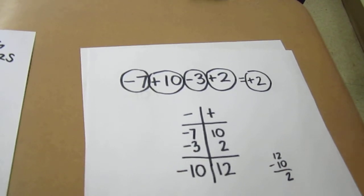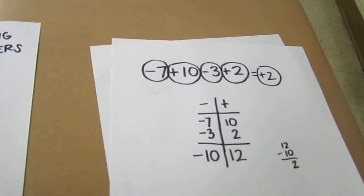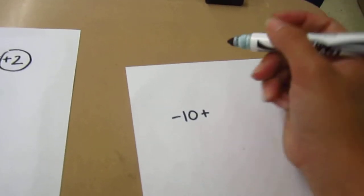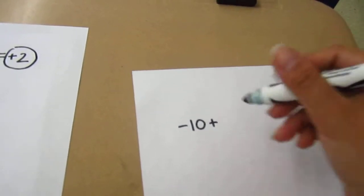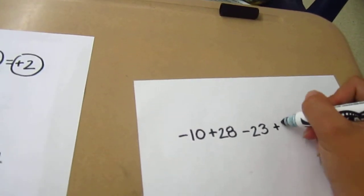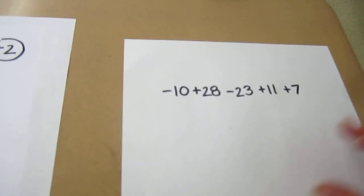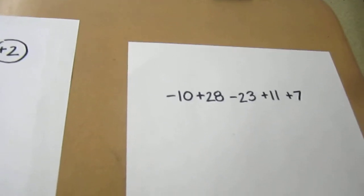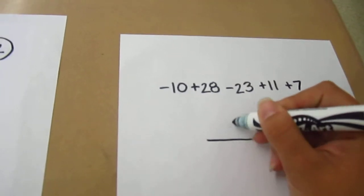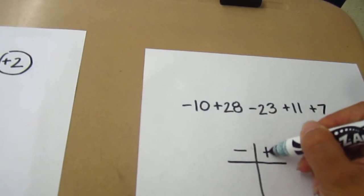I'm going to show you one last example. This time I'm going to give you a new problem, and we're just going to practice using the method where we write the physical number and do not draw out our negatives and positives. The expression is negative 10 plus 28 minus 23 plus 11 plus 7. We're dealing with larger numbers to really show the benefit of not drawing out integers, while still using the method of grouping on a t-chart with negatives on the left and positives on the right.